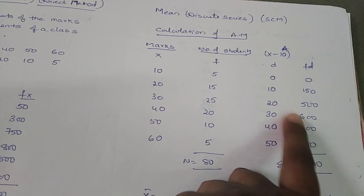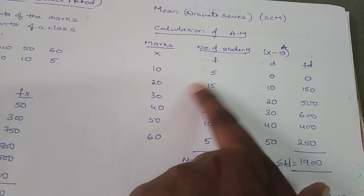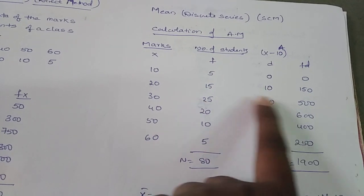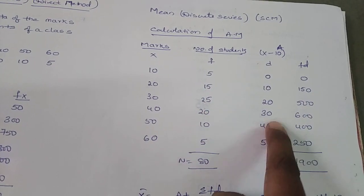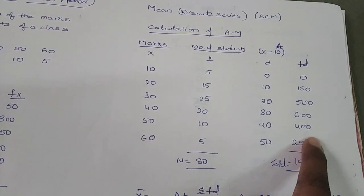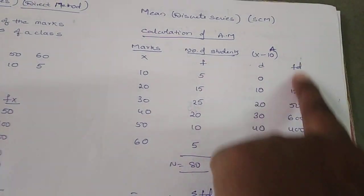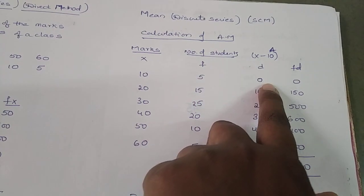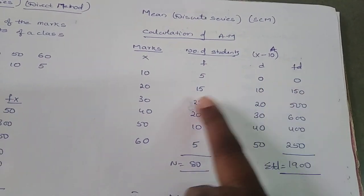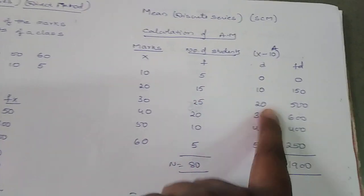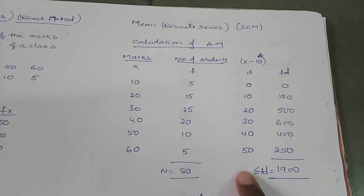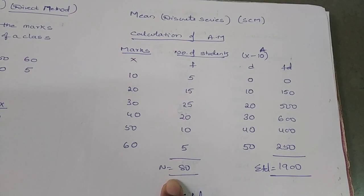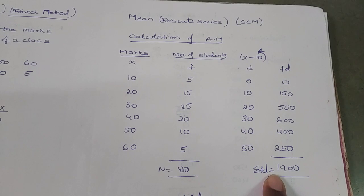Next, calculate fd = f × d: 5×0 = 0, 15×10 = 150, 25×20 = 500, 20×30 = 600, 10×40 = 400, 5×50 = 250. Totalling these gives σfd = 1900. n is the total of frequency, which is 80.